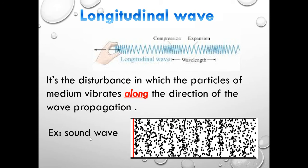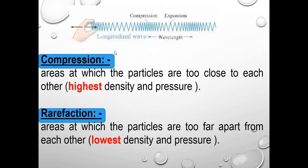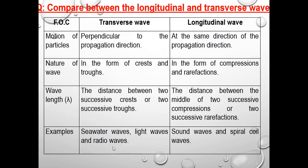An example of longitudinal waves is sound waves. In longitudinal waves, areas where particles are very close to each other are called compressions — these have the highest density and pressure. Areas where particles are far apart from each other are called rarefactions — these have the lowest density and pressure.